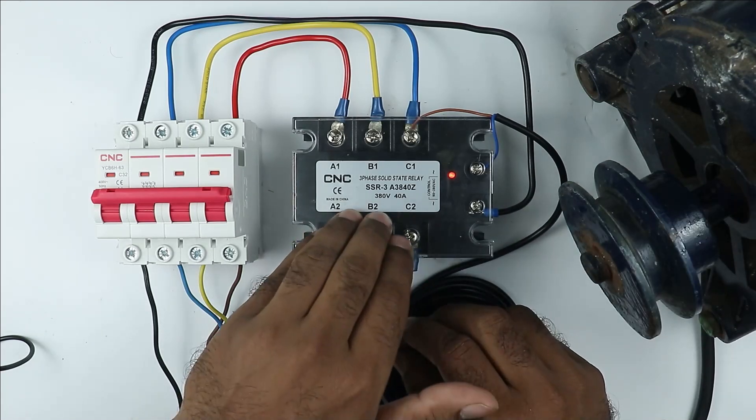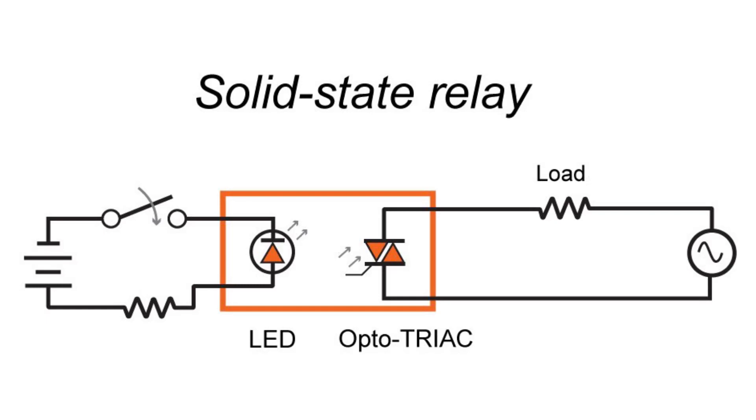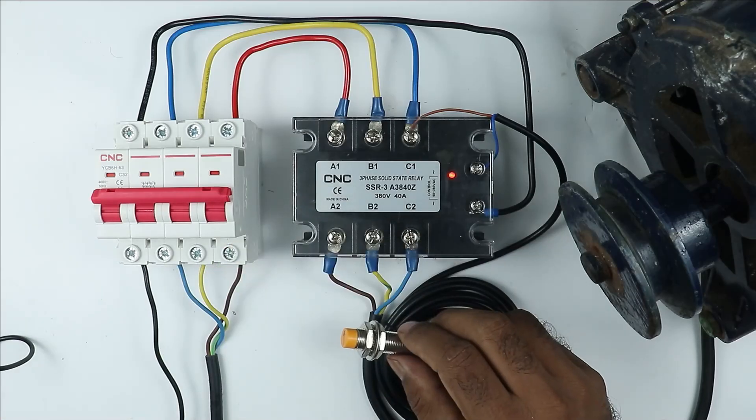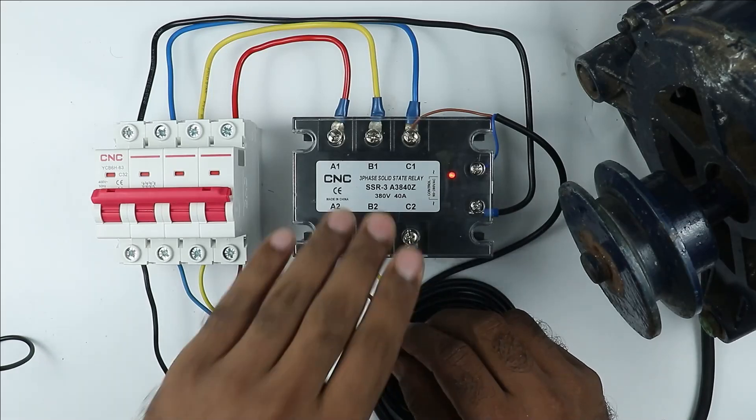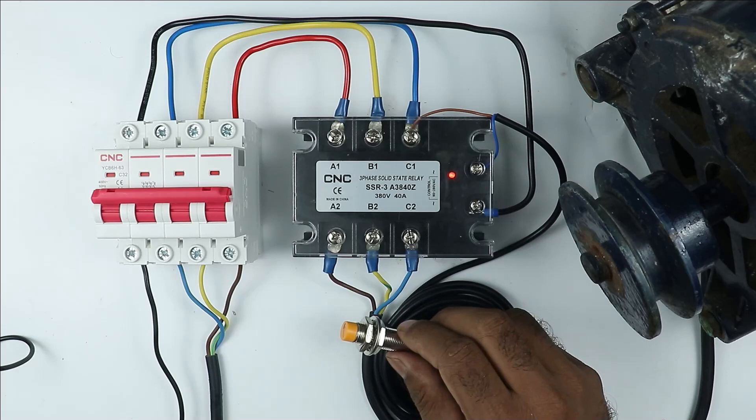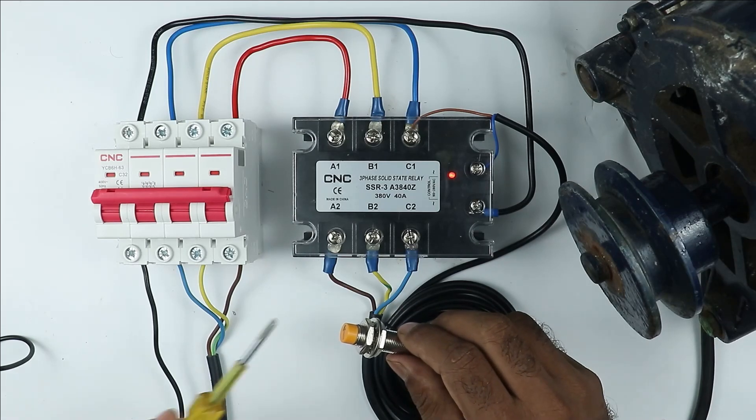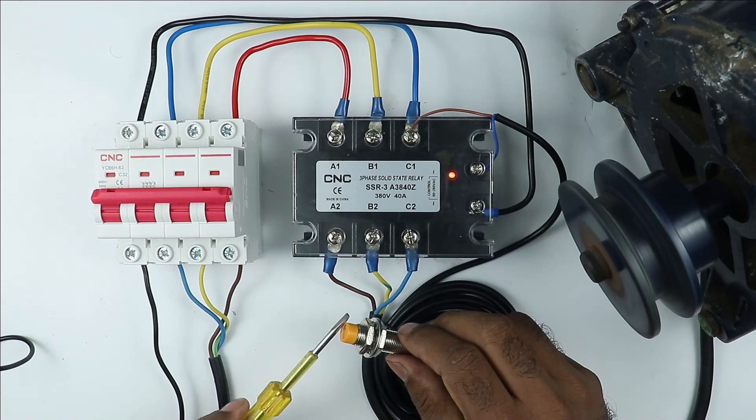To make solid state relay whole electronic circuit is used. Means you can say that a triac is used which is present inside through which circuit is turned on and off. When using triac inside relay no other mechanism is required. And this is why when we turn on this relay no sparking is generated and even no sound occurs.